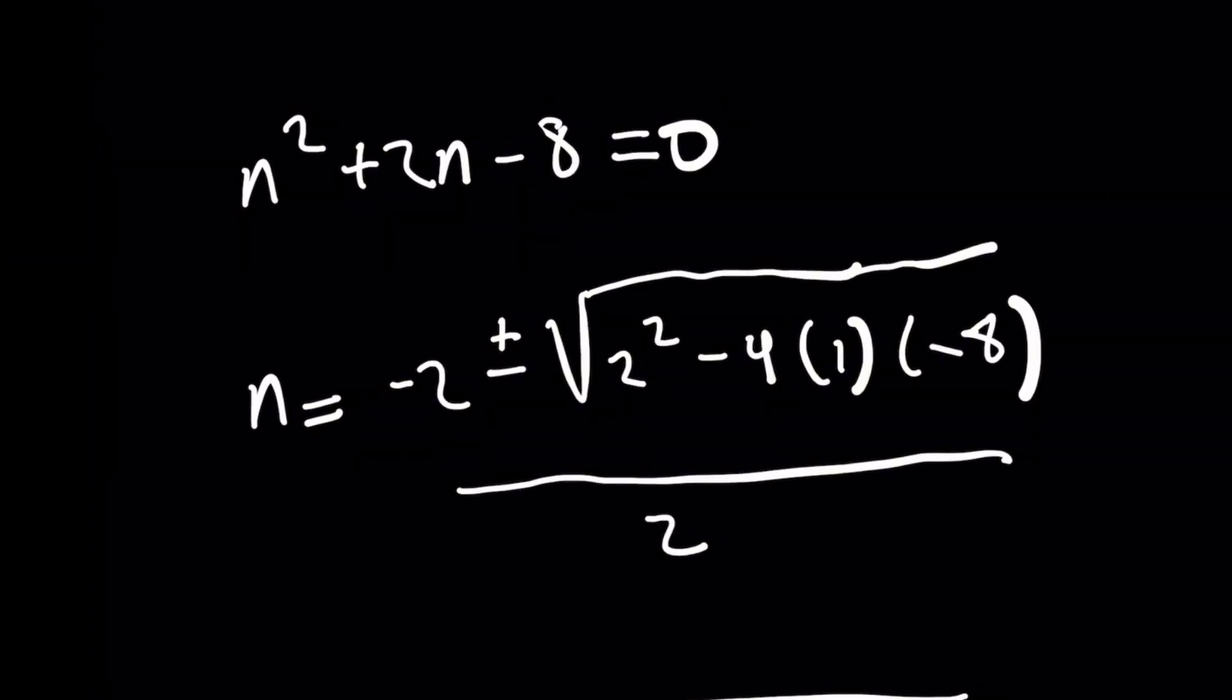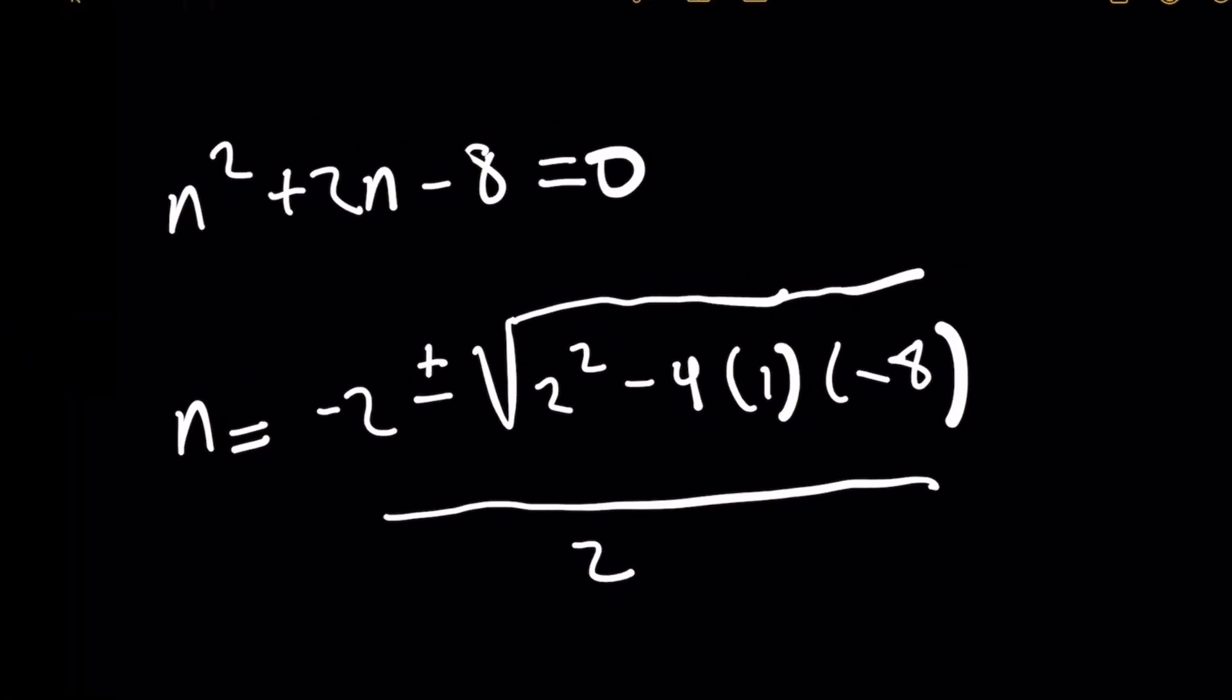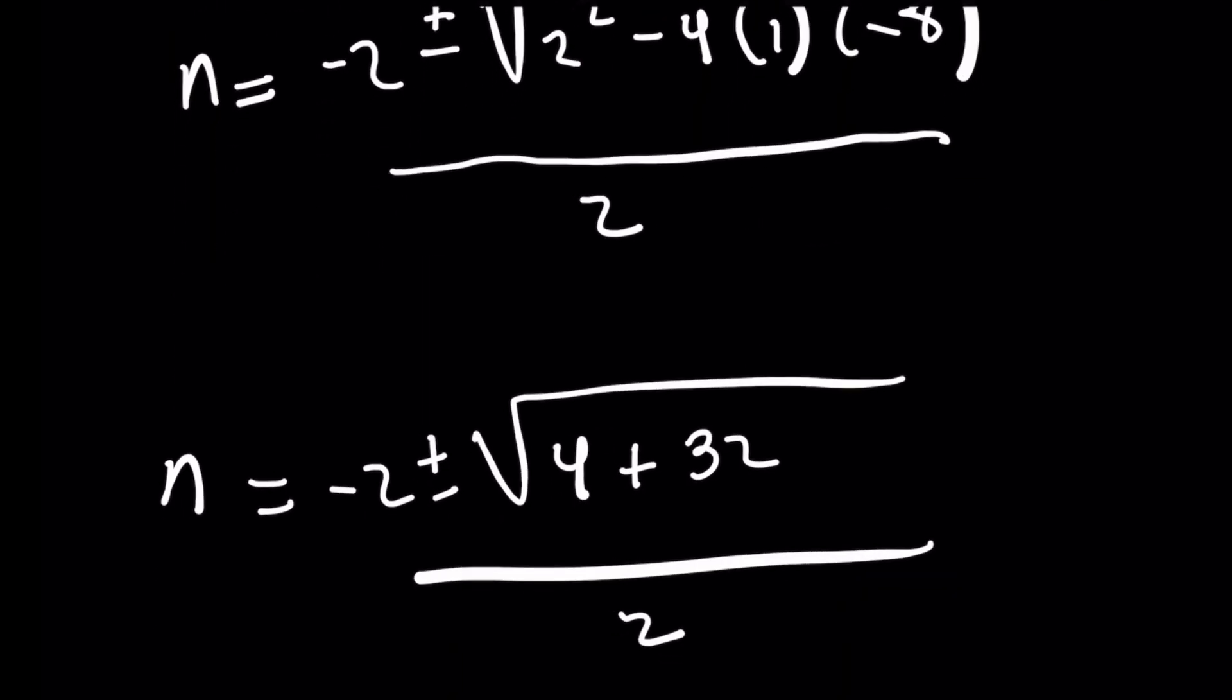If you remember, you've got negative b plus or minus the square root of b squared minus 4ac all over 2a. This is pretty easy peasy lemon squeezy if you all remember. And when you find out what the roots are going to be here by simplifying what's under the radical,